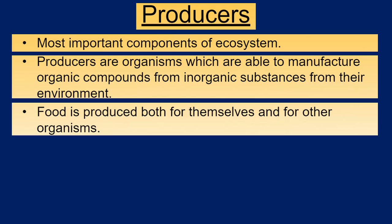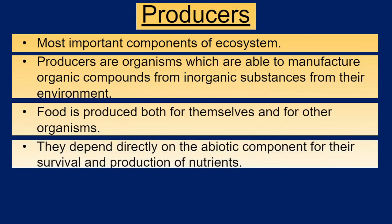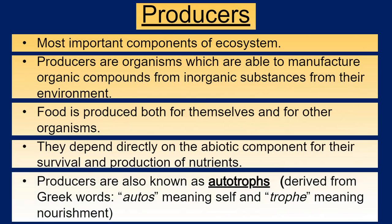The food produced by producers is not only for themselves but for other organisms as well — other organisms also feed on the primary producers. They directly depend on the abiotic component for their survival and production of nutrients. If you deprive producers of sunlight or carbon dioxide, they cannot produce food. These producers are also called autotrophs — from the Greek 'autos' meaning self and 'trophée' meaning nutrient or nourishment. So these are the ones capable of producing their own nutrients.